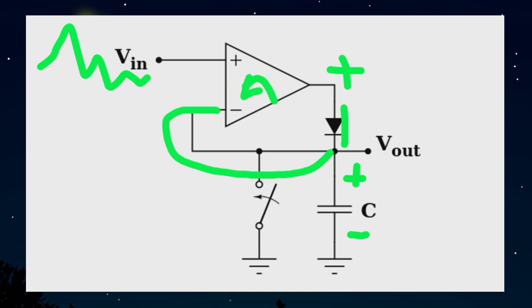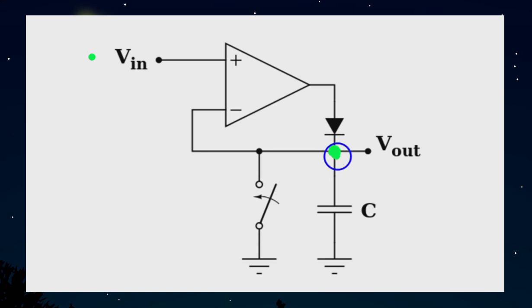The output would be gain times the input. So you say that the input voltage, whatever the input voltage is there, that comes at the output because it's a voltage follower. And this voltage charges the capacitor to the full value, and this process continues.